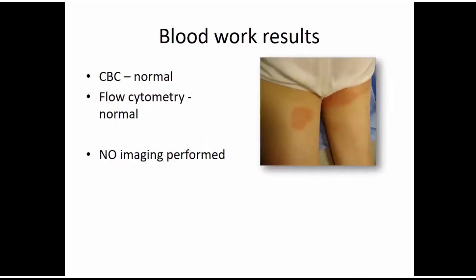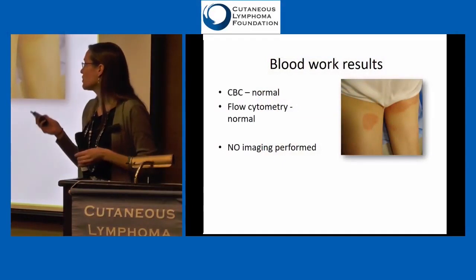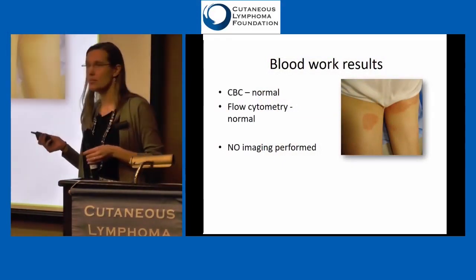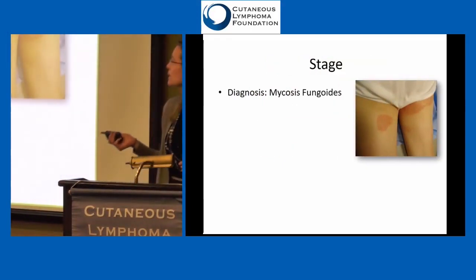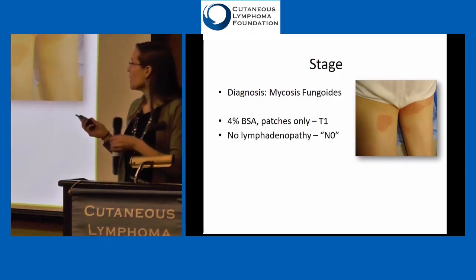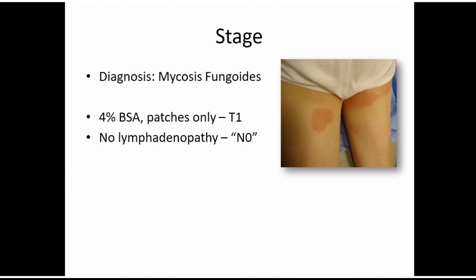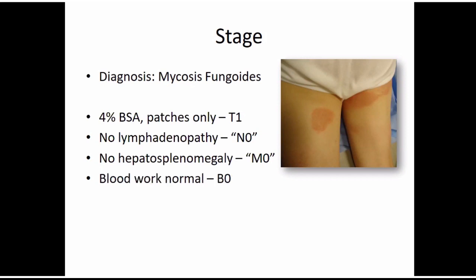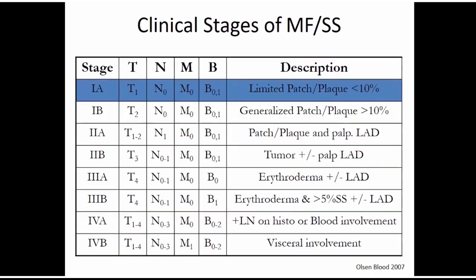For this particular patient, the blood counts were normal, the flow cytometry was normal, and there wasn't any imaging performed because it was very early with not a lot of skin disease. The diagnosis was MF from the skin and pathology. The body surface area was only 4% and only patches, so that's T1. There weren't any lymph nodes felt, no extra imaging was done, so we had all zeros for the rest. He would be Stage 1a — the earliest stage MF.